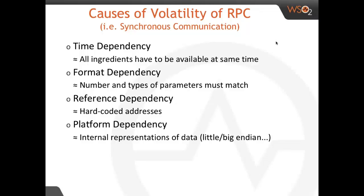What I would like to start with is to remind you what are the causes of volatility in synchronous communication — that means RPC. First of all, synchronous communication comes with a time dependency like in a phone call. That means all communication partners have to be available at the same time, because otherwise they don't communicate with each other. Next is a dependency in terms of format of the data to be exchanged. If you think about remote method invocation, for example, the numbers and types of the parameters that the client passes to a server must match exactly.